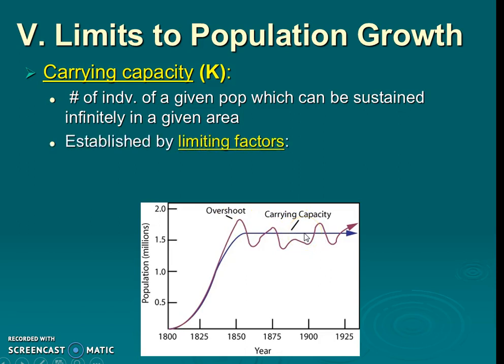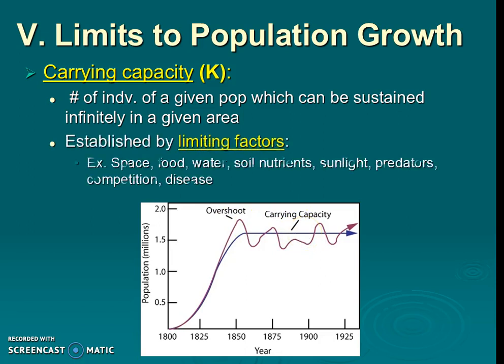Carrying capacity is established by limiting factors such as food, space, water, soil, nutrients, sunlight, and predators — all things that keep the population in check. Think of predator-prey relationships: that's a negative feedback loop, which represents stable equilibrium, or steady state.